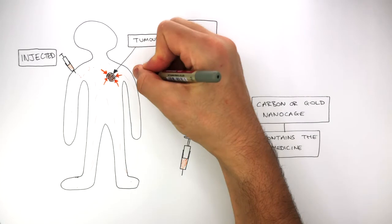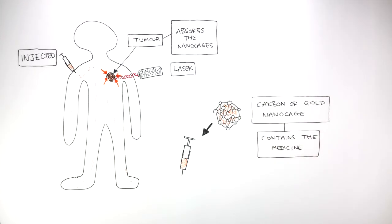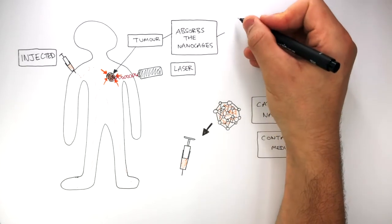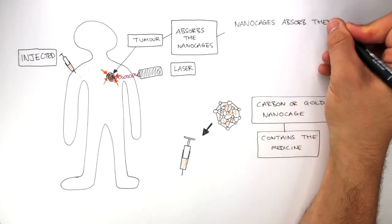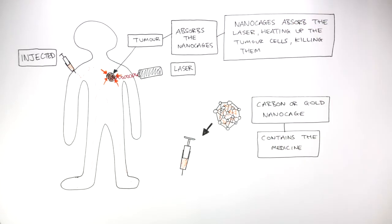A laser is then applied to the gold nanocages, which heats up and kills the tumour cells without destroying healthy tissue. The nanocages absorb the laser, heating up the tumour cells, killing them. This is a good thing for the patient, because healthy tissue is not damaged.